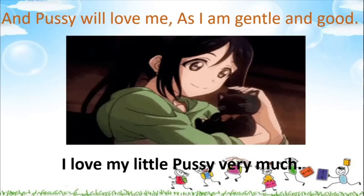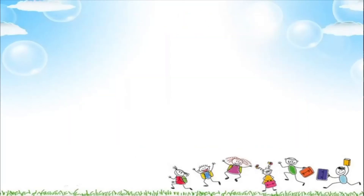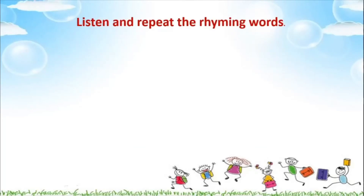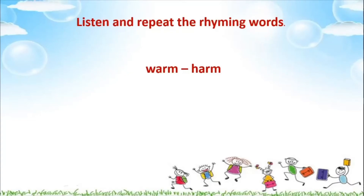Now there are some exercises along with this poem. The first exercise says: listen and repeat the rhyming words. Rhyming words means the words which sound the same. The first pair is 'warm' and 'harm' — see, 'warm' and 'harm' sound the same towards the end. We have picked up these rhyming words from the poem itself. Let us look at one more: 'away' and 'play' — 'away' ends with the A sound and 'play' also ends with the A sound. So these are rhyming words.